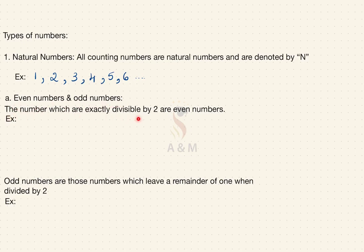The numbers which are exactly divisible by 2 are even numbers. Examples of even numbers are 2, 4, 6, 8, 10, etc. Let me take 6 as an example and divide it by 2. 2 threes are 6, and the remainder is 0. Since you get remainder 0, 6 will be considered as an even number.